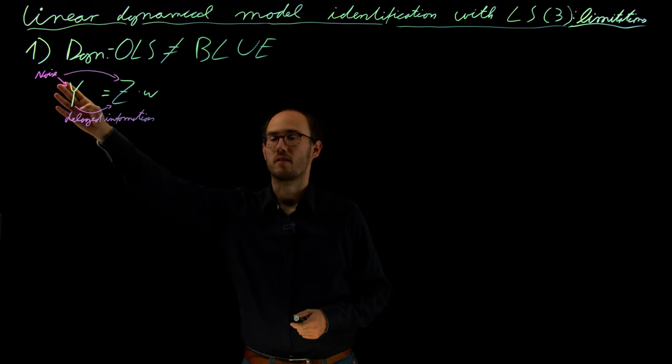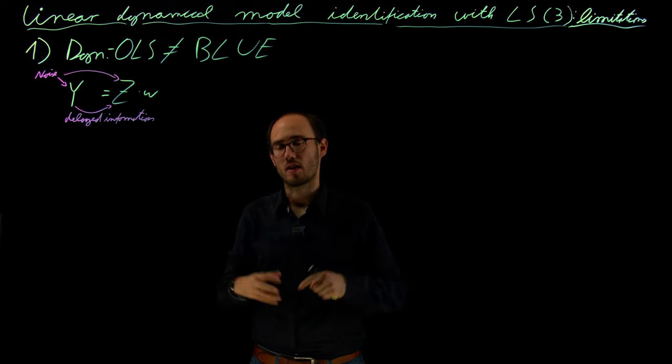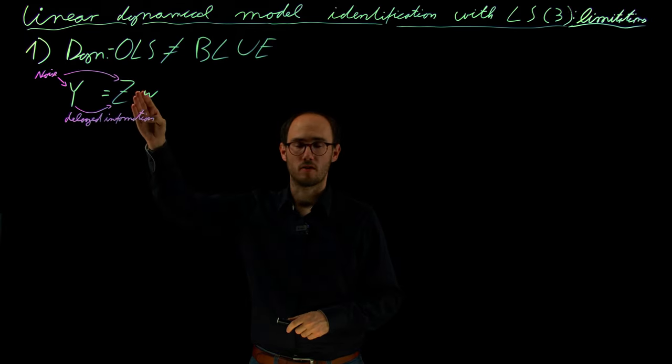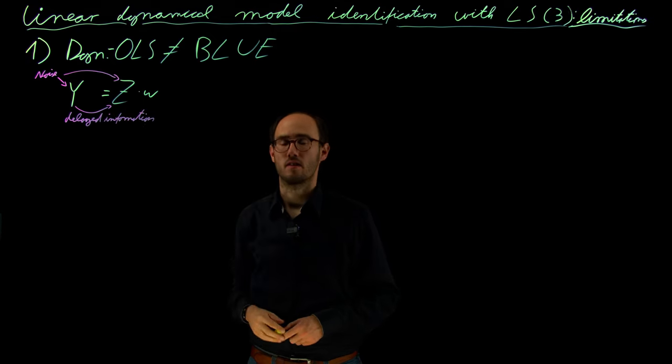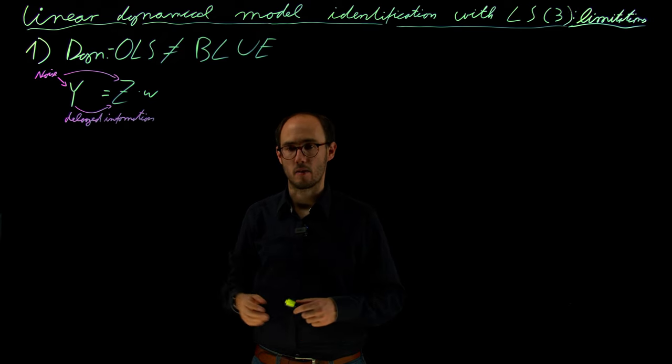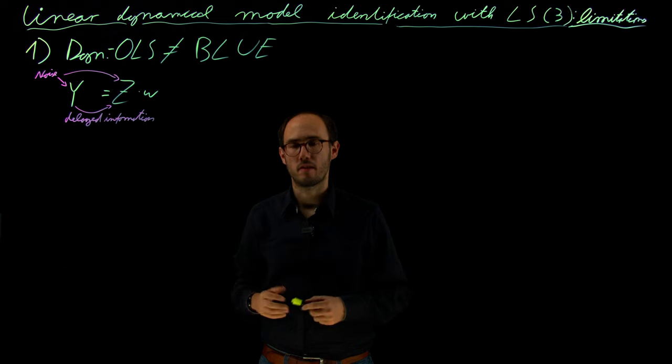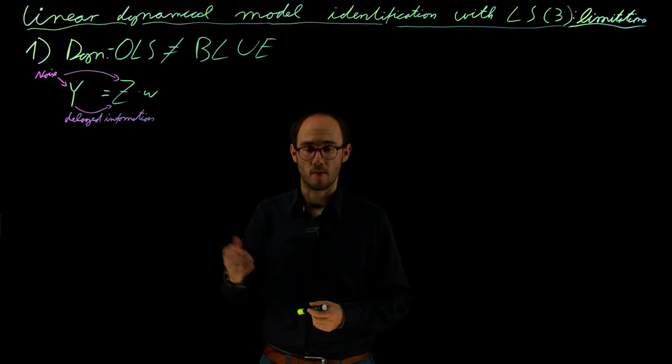Because we have this measurement noise impact, and due to the dynamical structure, due to the temporal structure of our data, that becomes also part of the regressor matrix. Therefore, we also have some correlation in terms of y and z over the temporal domain, and we get problems if there is significant noise in the state measurements.